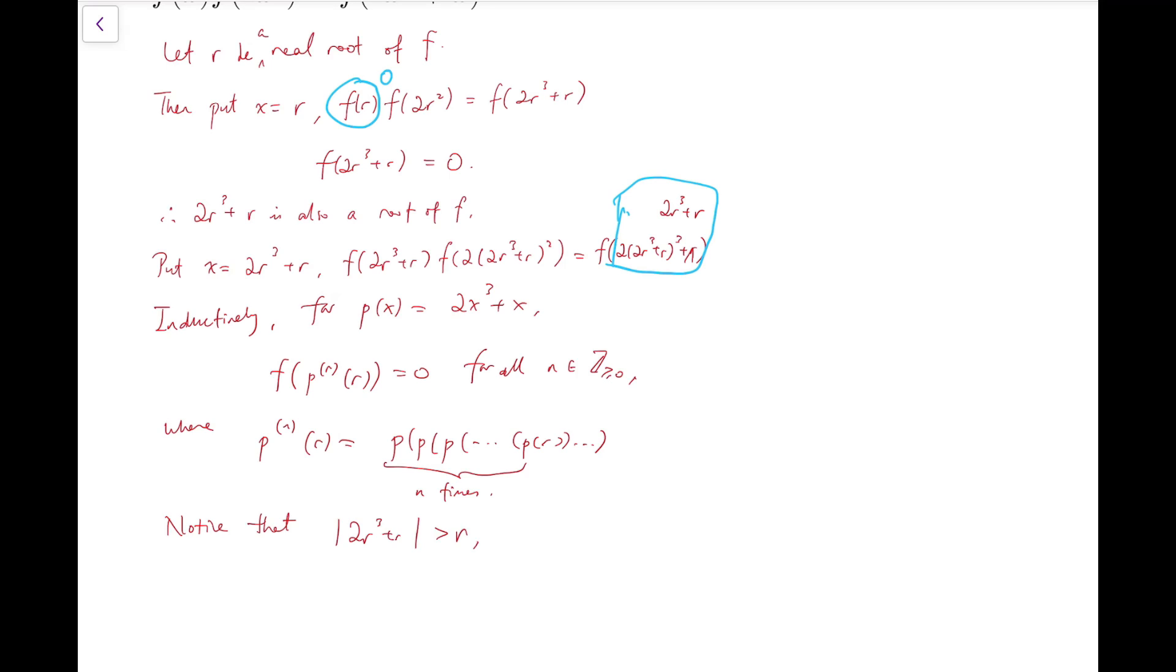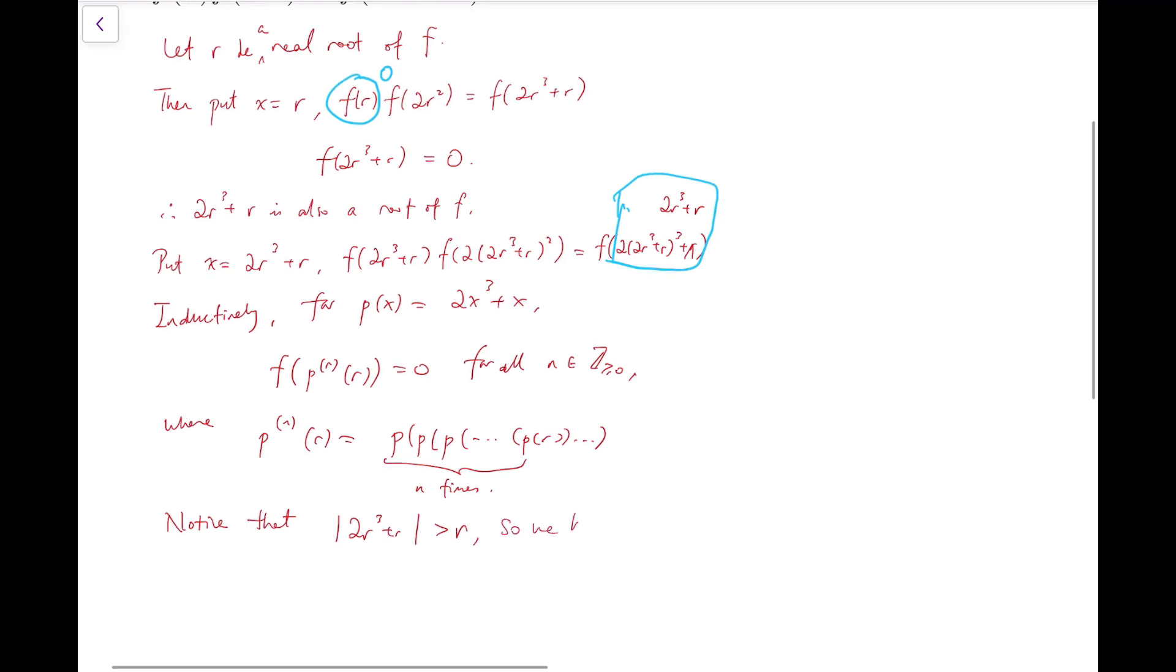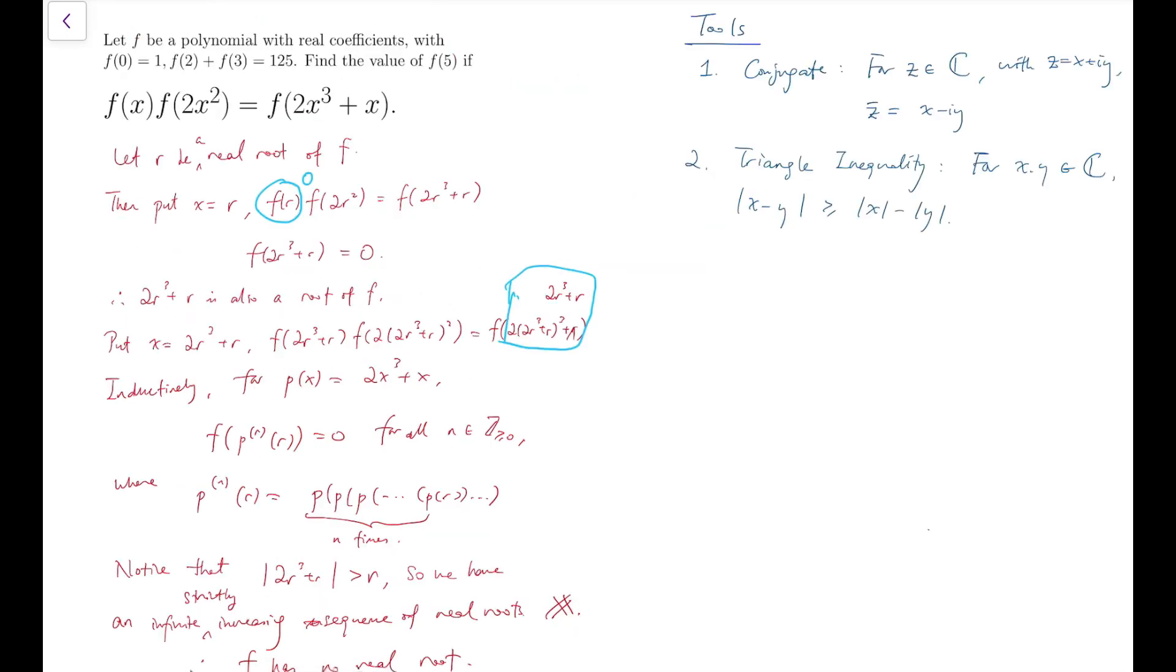And by iterating, I know that the roots is an increasing sequence in terms of modulus. So it will go forever. And it contradicts the fact that there are actually finitely many number of roots in f, not just increasing but strictly increasing. And so the only conclusion we can make at this point is that f has no real roots.